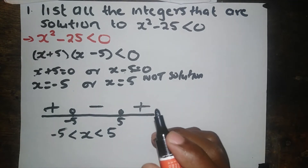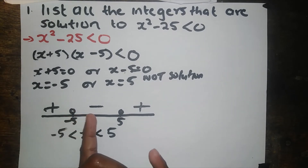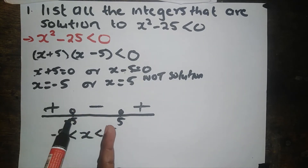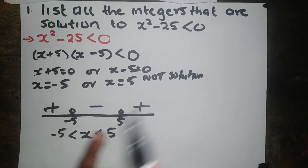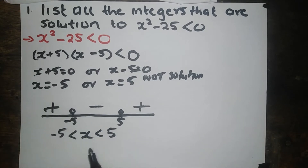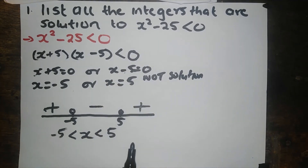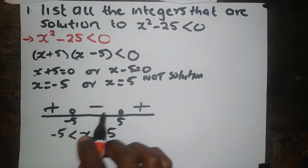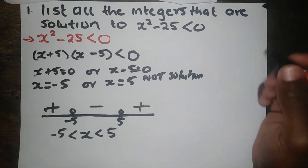I hope you understand, guys. We need the values where our inequality is less than 0. So when you get the negative values, those values are less than 0. When you substitute those values back to the inequality, you get a negative value — that means those values certify this inequality. I hope you understand, guys.